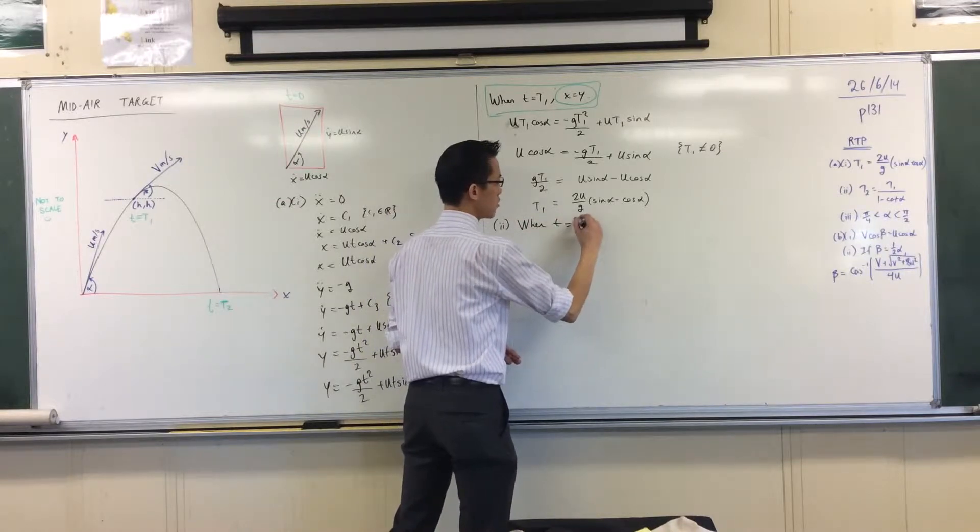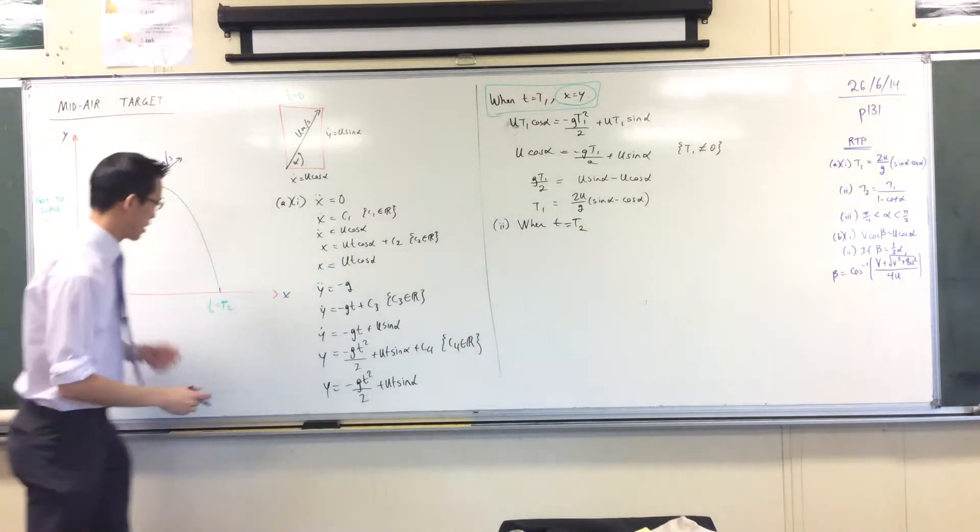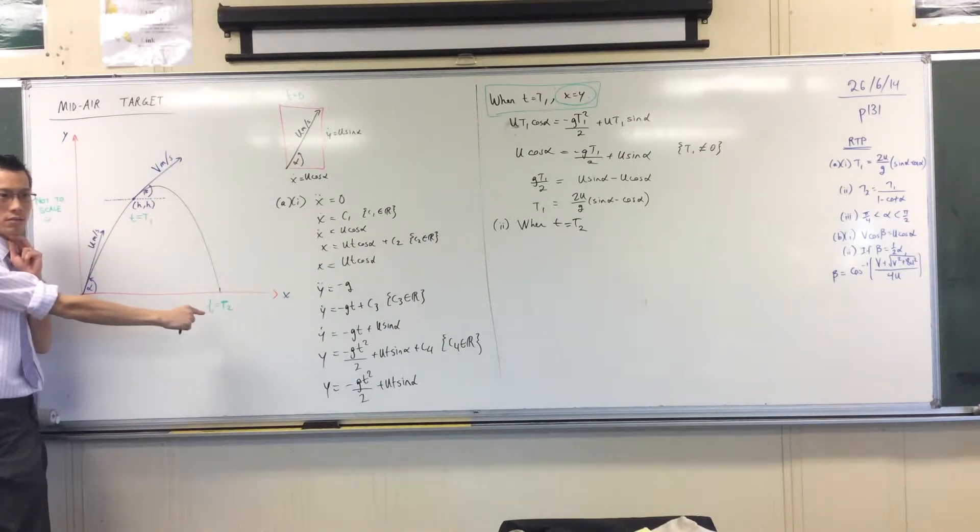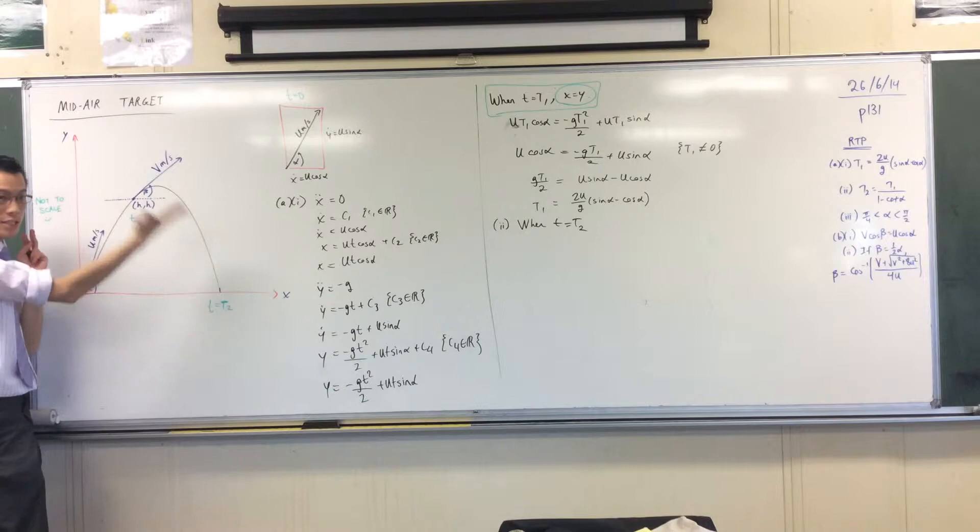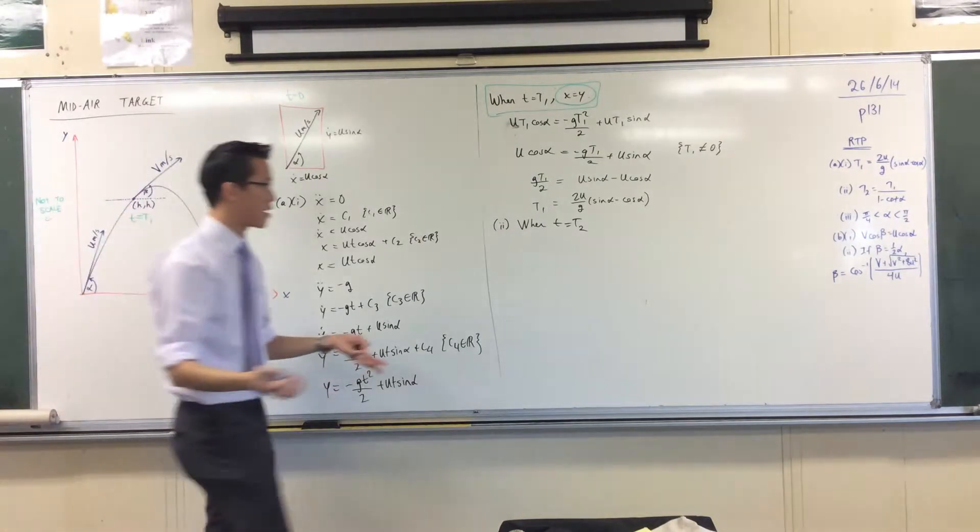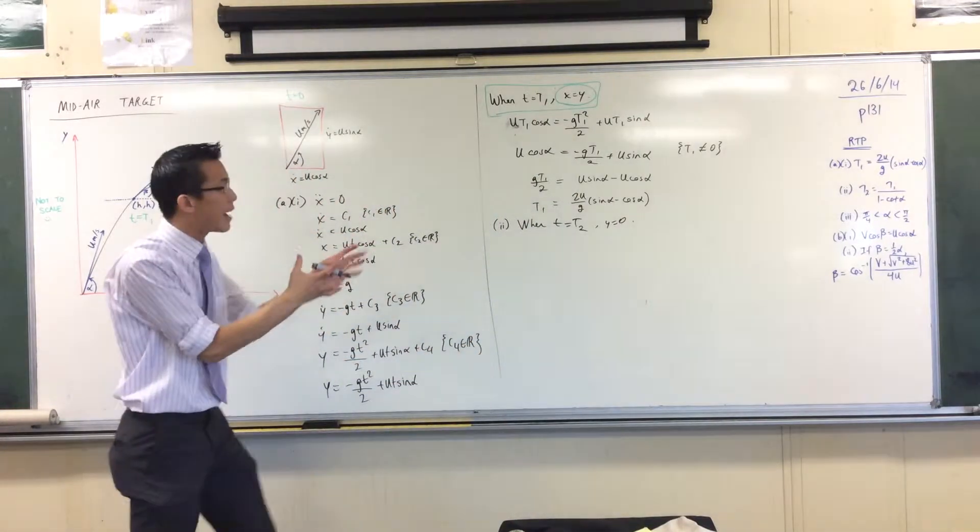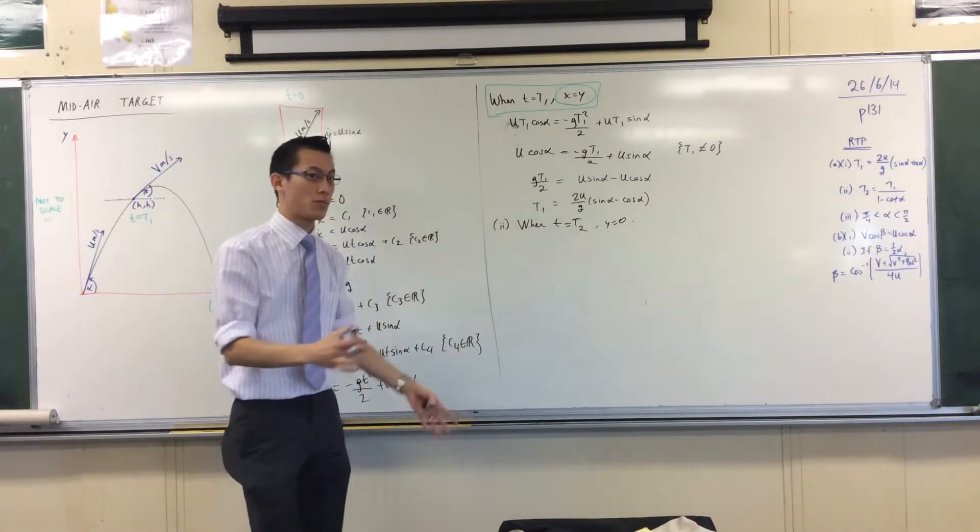When T equals T2, what's special about it? Well probably, the most obvious thing is that being that it hits the ground again, its vertical displacement is zero, right? Is that okay, does that make sense? So I'm going to use that, just like I used this, as my starting point. I have an equation for vertical displacement.